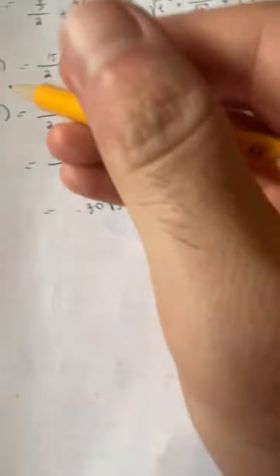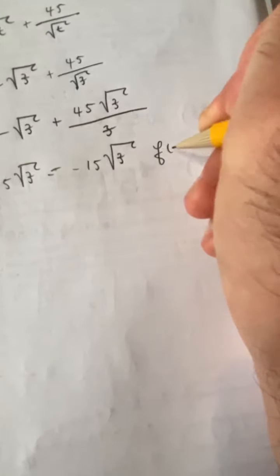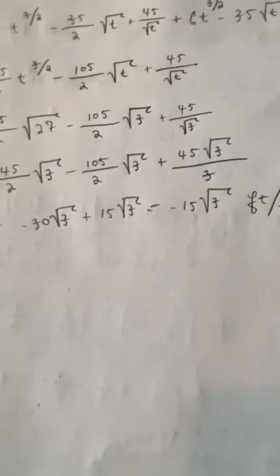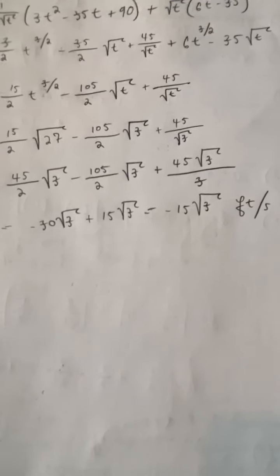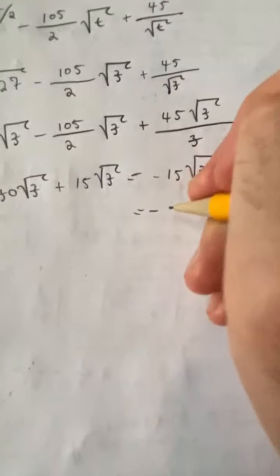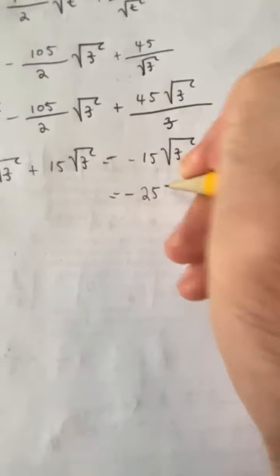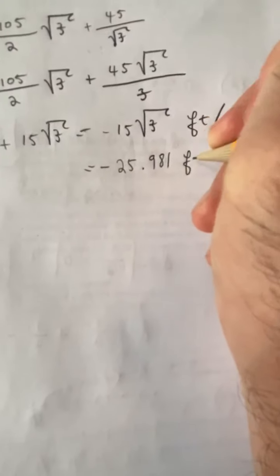So our velocity at 3 seconds is negative 15 radical 3 feet per second. If you plugged this into a calculator and got a decimal answer, this is about negative 25.981 feet per second.